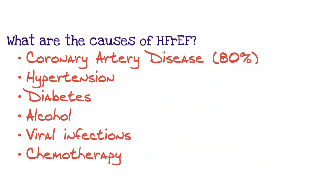Number one is coronary artery disease, which accounts for about 80% of heart failure with reduced ejection fraction. Next is hypertension, otherwise known as high blood pressure. Then diabetes. Alcohol — alcoholics will tend to have what's called an alcoholic cardiomyopathy, meaning the alcohol caused dilation of their ventricles and chambers, leading to heart failure. And viral infections.